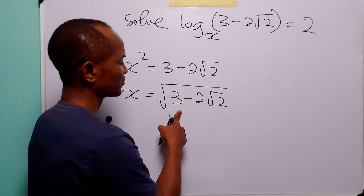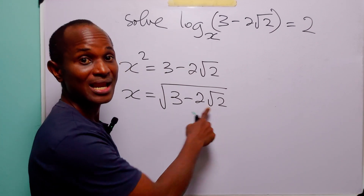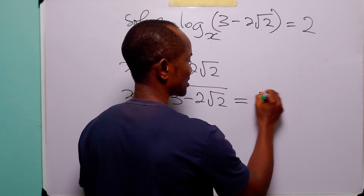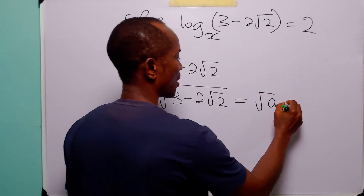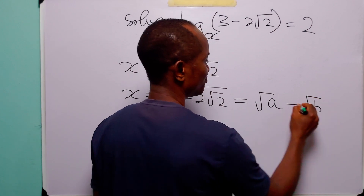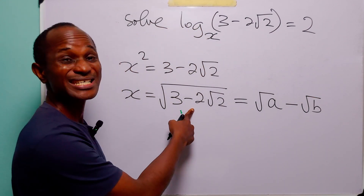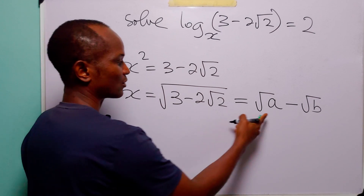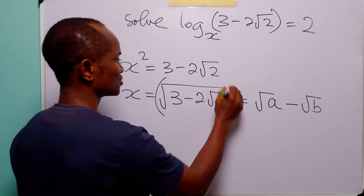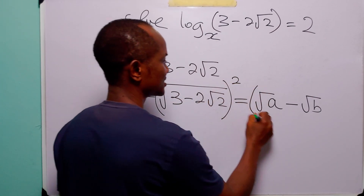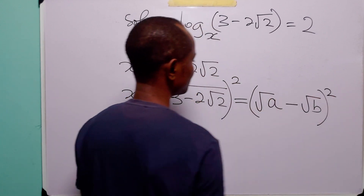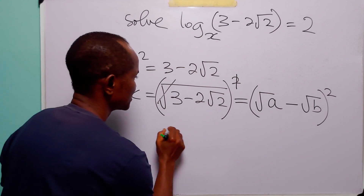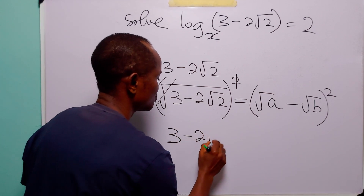Now to find the square root of 3 minus 2 root 2, let us assume that there are two numbers a and b such that root a minus root b is equal to the square root of 3 minus 2 root 2. To find a and b, what we have to do is square both sides of this equation.